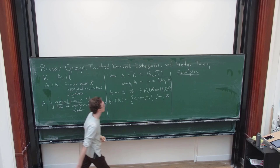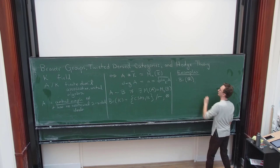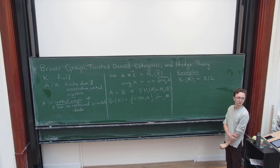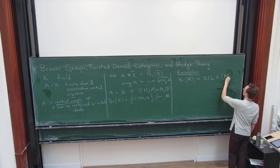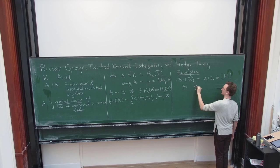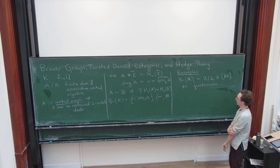So the very first example of a Brouwer group that one meets is the Brouwer group of the real numbers. And this turns out to be isomorphic to Z mod 2. And the non-zero element is represented by Hamilton's quaternions.